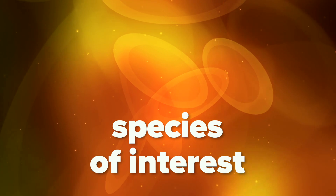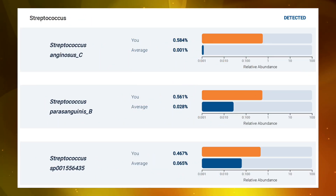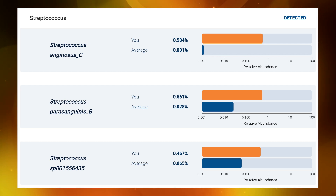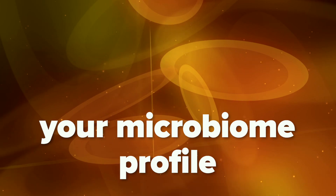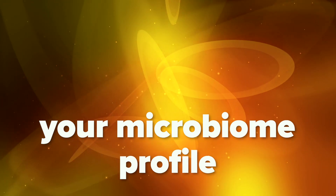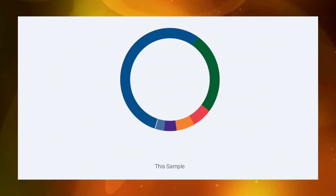Certain species have been widely studied and have many characteristics important for health. Your species of interest levels are compared to the average seen in a healthy population. This section shows the different bacteria, archaea, and eukaryota present in your gut.